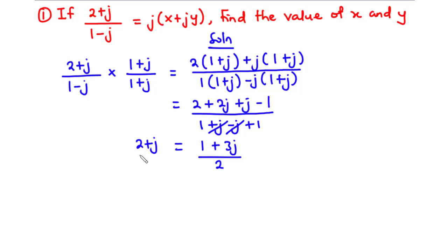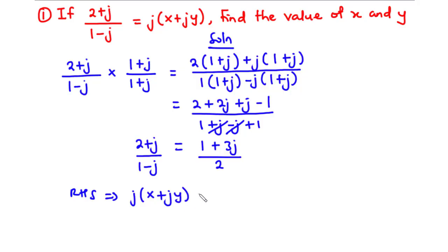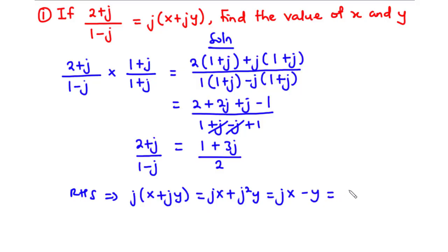Therefore (2 + j) divided by (1 - j) equals (1 + 3j) divided by 2. Now let's resolve the right hand side expression: j times (x + jy). Multiplying j across gives jx plus j squared y, and since j squared equals negative 1, this becomes negative y plus jx.